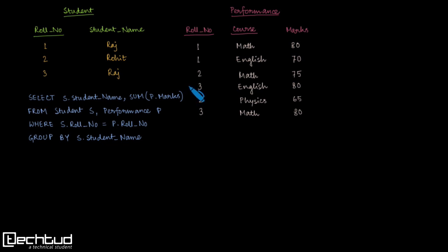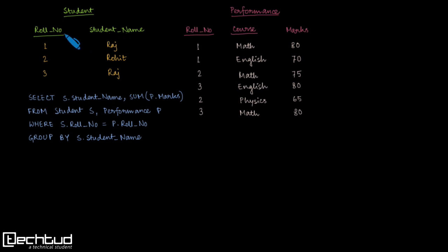What we have here are two relational schemas with data: a Student table and a Performance table. The Student table has two attributes — roll number and student name — where roll number is the primary key. The Performance table has roll number, course, and marks, and roll number and course together form the primary key.